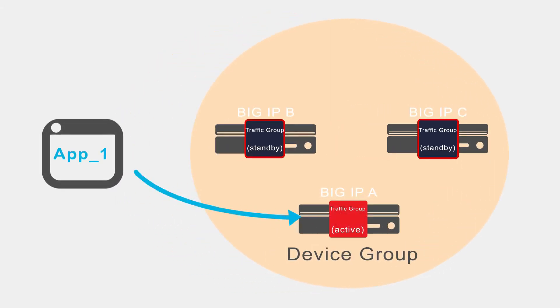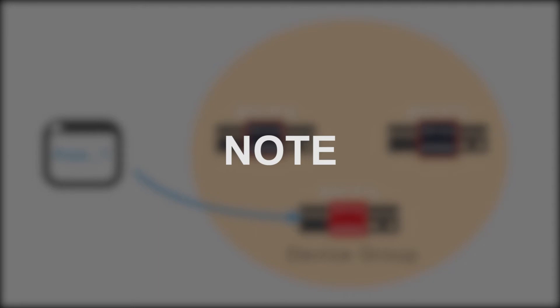Here we see an application flow targeting a traffic group on a BIG-IP device. There's an identical instance of the traffic group on every device, but only one instance can be active for the application flow at any given time. It's important to note you can have up to 127 active traffic groups in a sync failover device group.